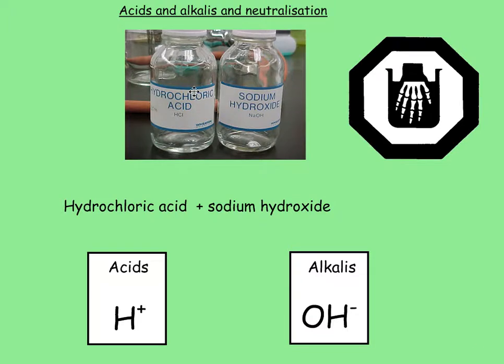We've got a beautiful picture here of hydrochloric acid and sodium hydroxide. This obviously is the acid, given away a bit by the word acid, and this is sodium hydroxide. Now, all acids have got hydrogen ions in them. Sulfuric acid is H₂SO₄, so it's got some H in it, and nitric acid, HNO₃, has H in it. So acids have H⁺ ions — really important.